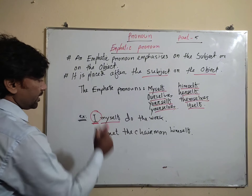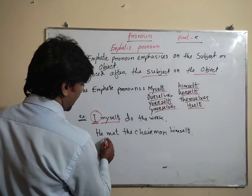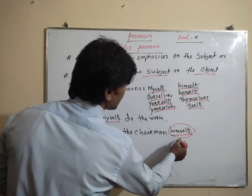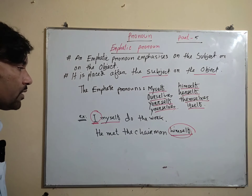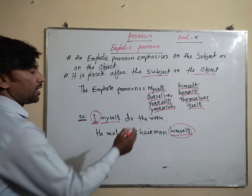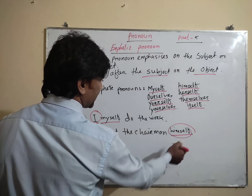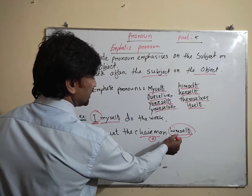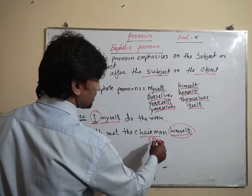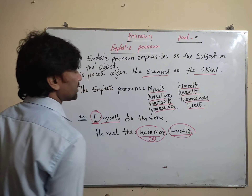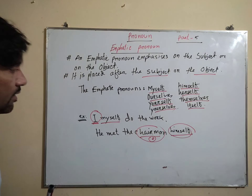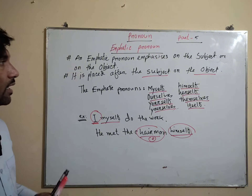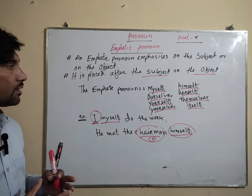'I met the chairman himself.' Here, 'himself' is an emphatic pronoun because it is placed after the object and it emphasizes on the object. That is why 'himself' is an emphatic pronoun here. Now I am going to give you the difference between emphatic and reflexive pronouns.